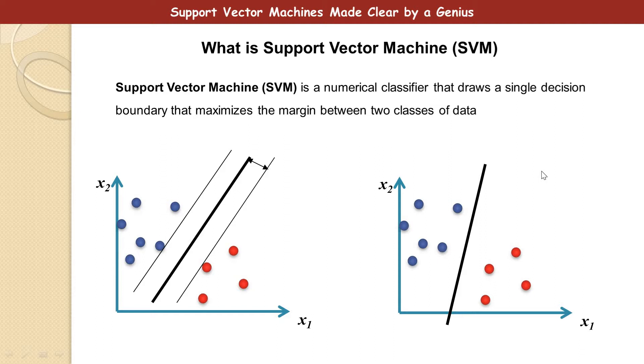Of course, you know that the answer is no, because if the margin has to be maximum, it means you have only one Support Vector Machine. So only one decision boundary.